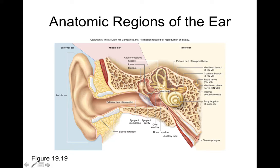This tube is basically an elastic tube that connects from the middle ear to the nasopharynx, which is the back part of your nasal cavity, to help equalize pressure between the middle ear and the nasopharynx. The inner ear is a bony labyrinth within the temporal bone, and it contains the sensory structures necessary for equilibrium as well as hearing.